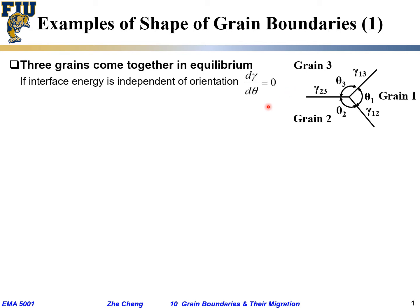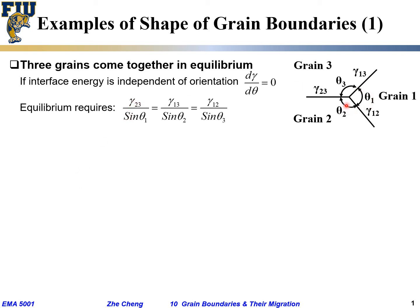In that case, dγ/dθ would be zero. Equilibrium means the local structure does not change with time — locally the structure stays the same unless conditions change. Under equilibrium conditions, the ratio γ₂₃ over the opposite angle is the same for all three: γ/sinθ₁ equals γ₂₃/sinθ equals γ₁₃/sinθ equals γ₁₂/sinθ — all these ratios should be equal.